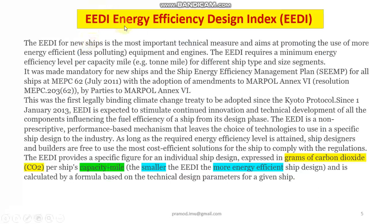For implementing this, the first step is the EEDI — the Energy Efficiency Design Index — for new ships. It is a very important technical measure whose main aim is to use more energy-efficient and less polluting equipment and engines on ships. The EEDI requires a minimum energy efficiency level per capacity mile — that is, for carrying one ton of weight for one mile, a minimum efficiency level is defined. This becomes a standard by which different ship types and sizes can be compared, using EEDI as a benchmark.